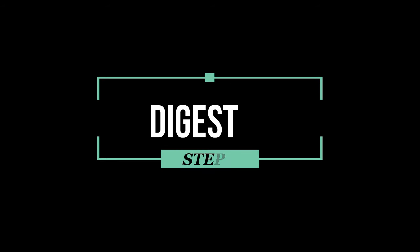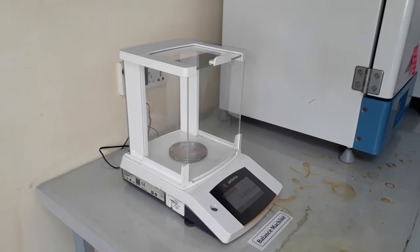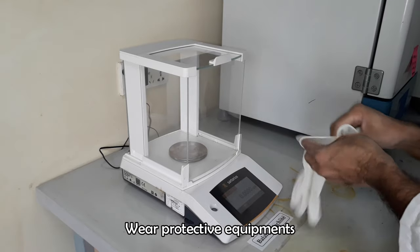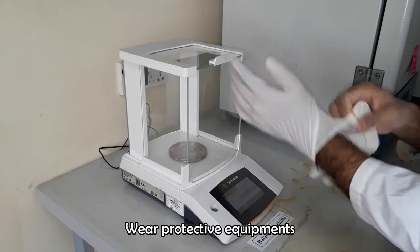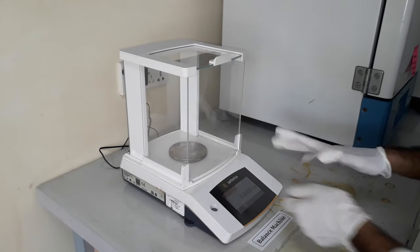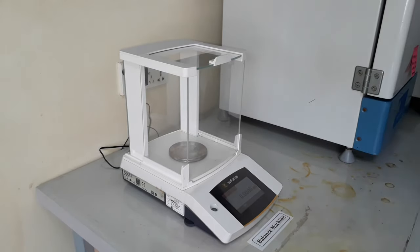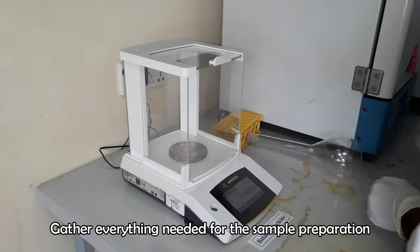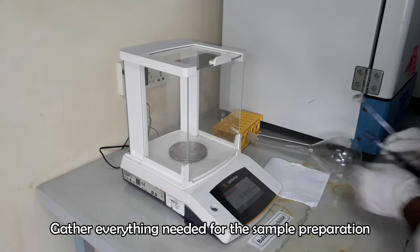So let's do the protein analysis. First of all we need to digest the sample by concentrated sulfuric acid in the presence of catalyst and heat. Wear protective gloves and mask. Use acid-proof gloves where necessary. Gather everything you need to prepare the sample before going for the digestion.